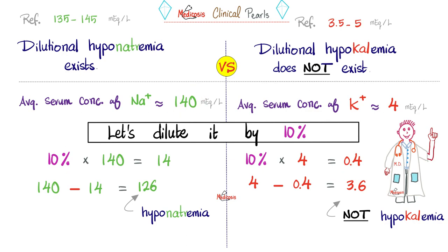Let's dilute it, which means we will decrease the concentration of sodium by 14. It becomes 126 milliequivalents per liter. Is this hyponatremia? Yes, 126 is way lower than 135. So yes, this patient has true hyponatremia.